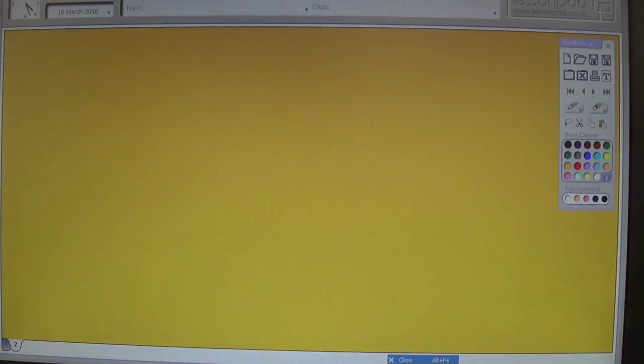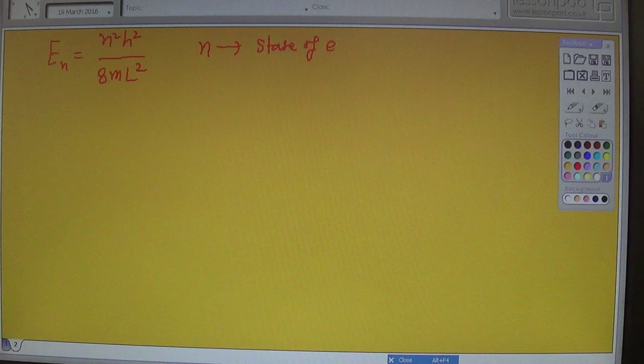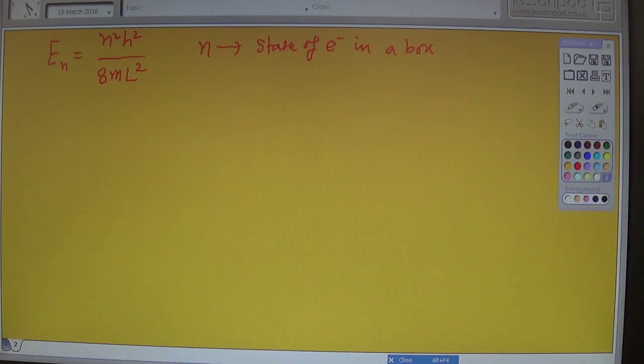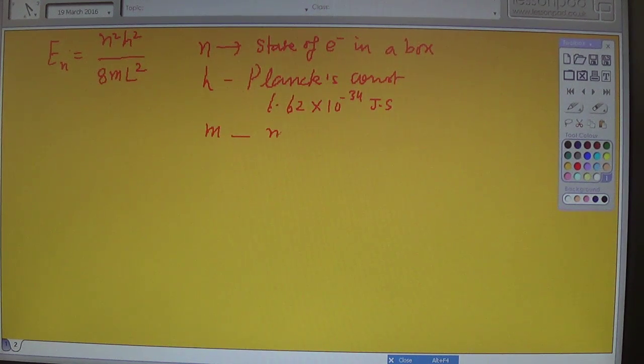We have En equals n square h square upon eight m L square, where n represents the state of the electron in a box. h is Planck's constant, that is 6.62 times 10 raised power minus 34 joule second. m is the mass of the electron, that is 9.1 times 10 raised power minus 31 kg.